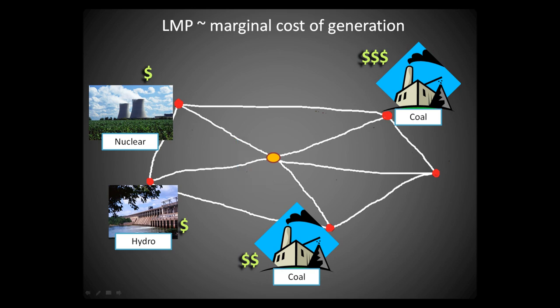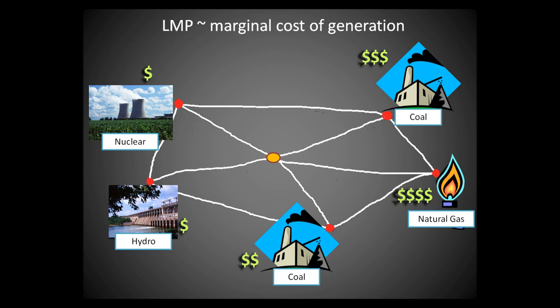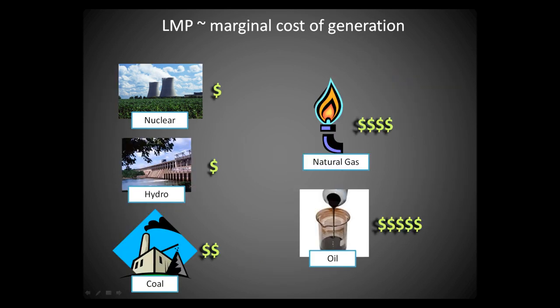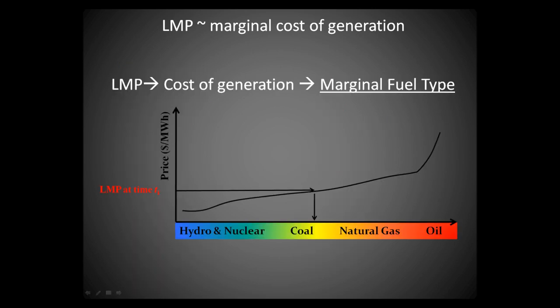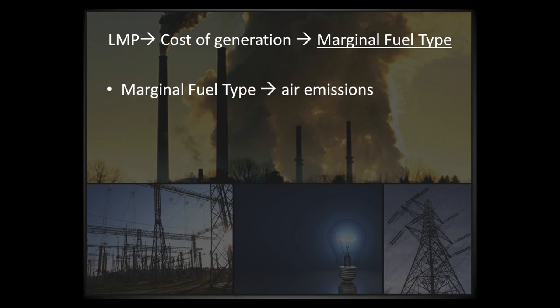You may have noticed that the marginal generator has the highest cost per megawatt out of the generators that are online. This is because the generators with cheaper costs per megawatt hour are already dispatched and, since they are less expensive to run, they are already being operated at their capacity and cannot supply more energy. LMPs are related to the cost of generating electricity at the marginal unit. Different power sources have different costs associated with them. It is almost always cheaper to generate electricity using coal than with fuel oil. Knowing this, it is possible to relate LMP to the fuel type of the marginal generator. Since the marginal unit is the only one that increases or decreases its output due to small changes in demand, it makes sense that small changes in demand will cause changes in emission rates only at the marginal generator.